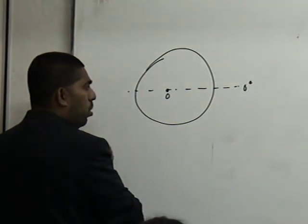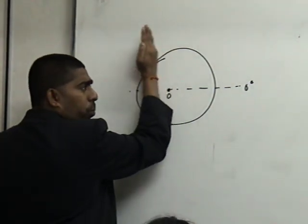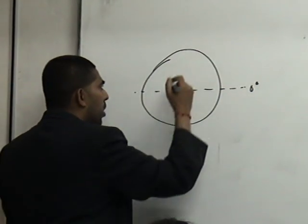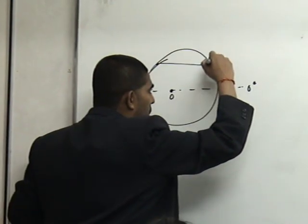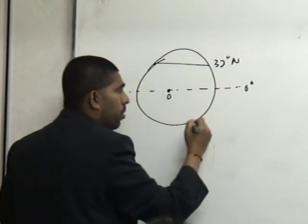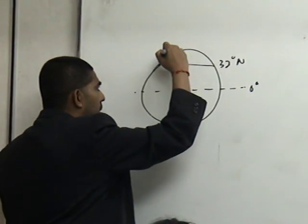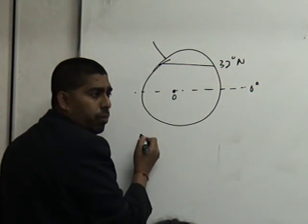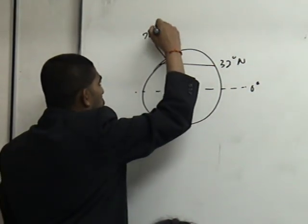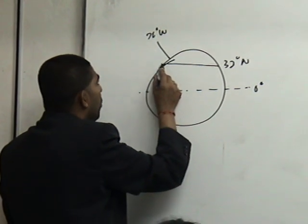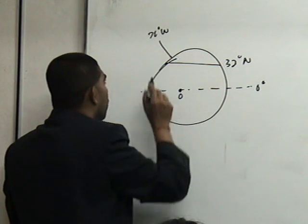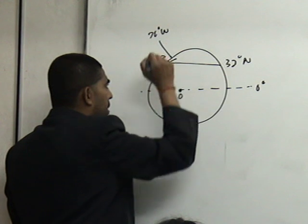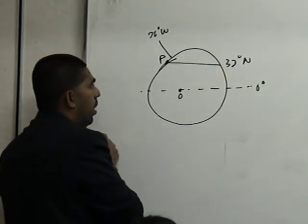And I shall put the equator at the center. This is the equator. And O is the center of the Earth. This is the equator which will be 0 degrees. Are you all okay? So, point P is what? 32 degrees north. And 20 degrees west. Okay, 20 degrees west. So, if this is the meridian, so this will be your west and this will be your east. Agreeable. Wonderful.